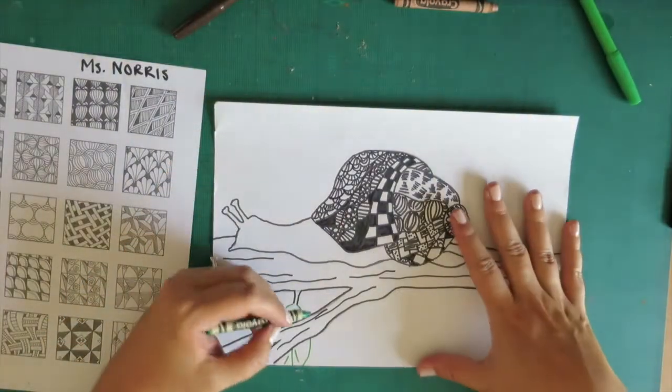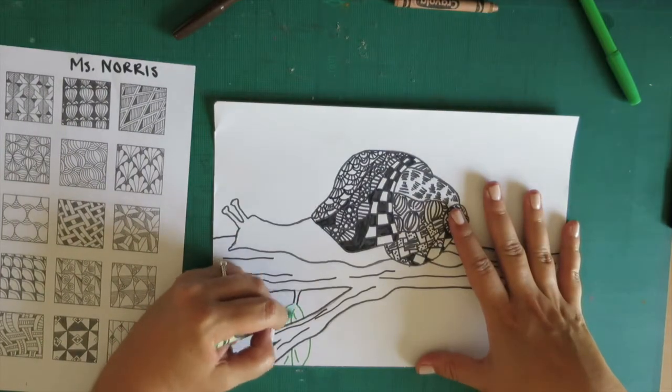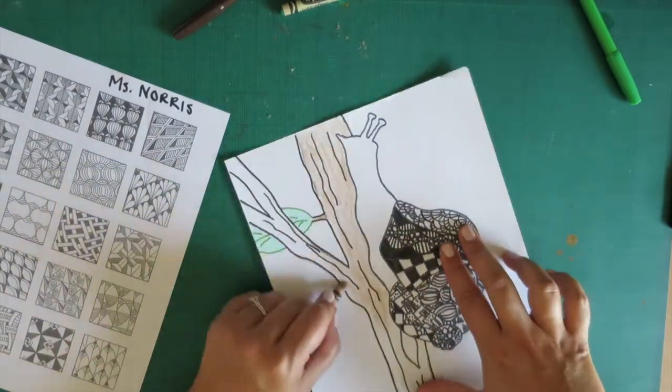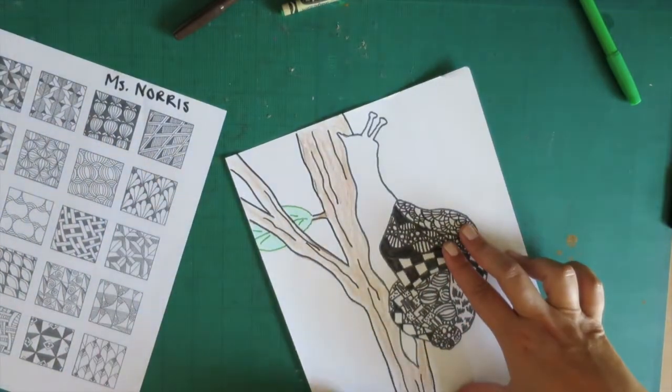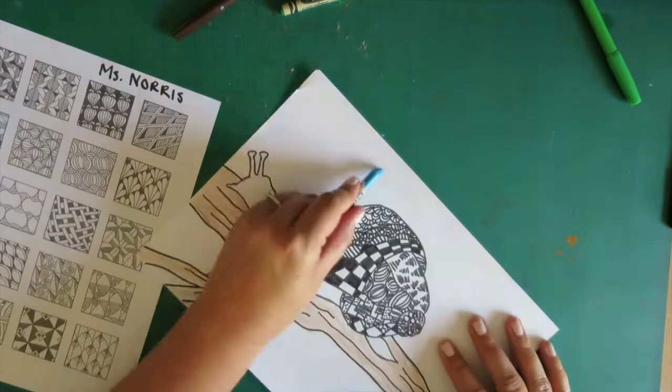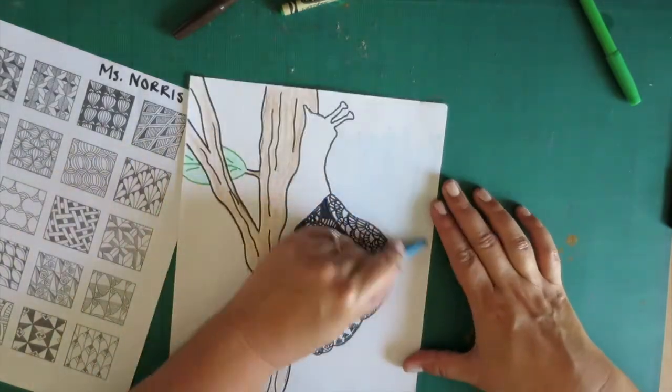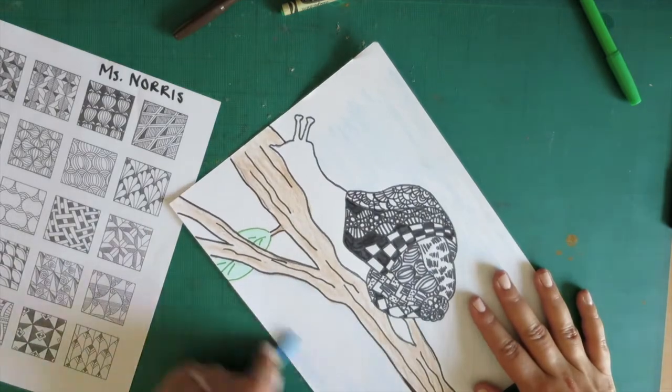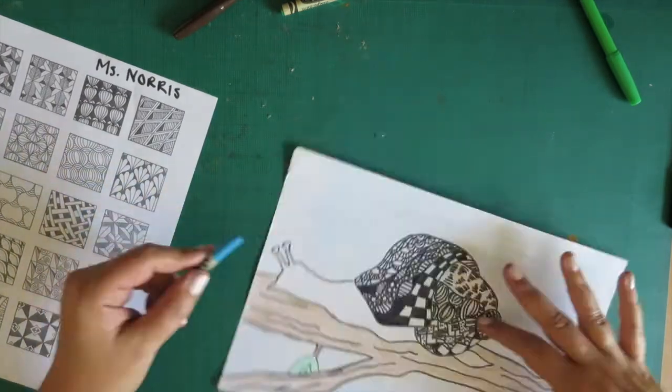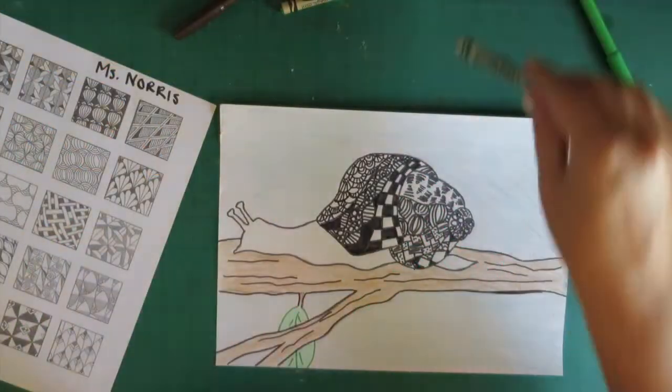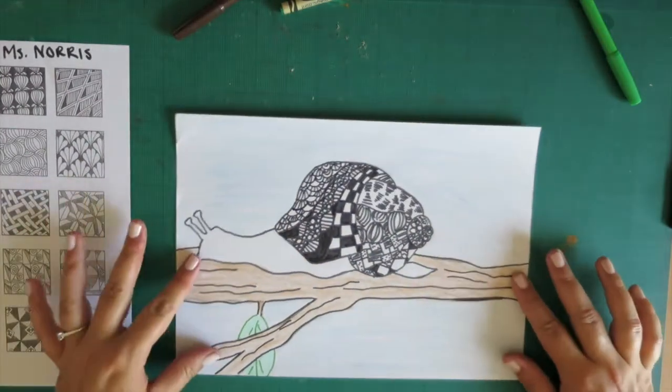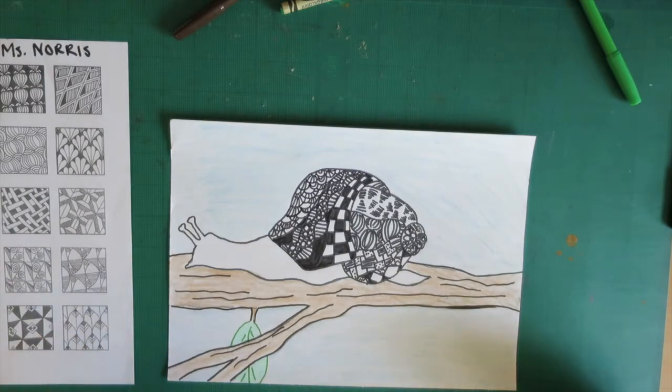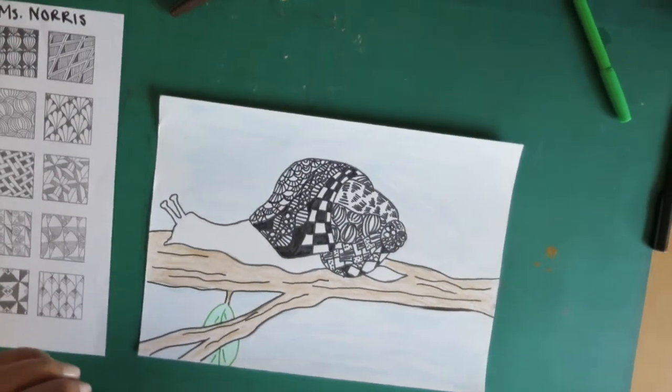Then you can go ahead and color in the background. Now we have a colored in background and our black and white Zentangle shelled animal.